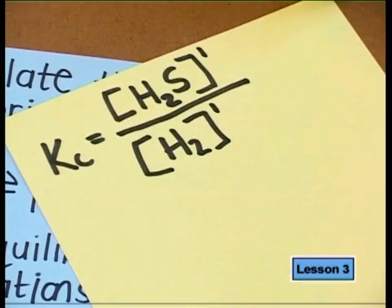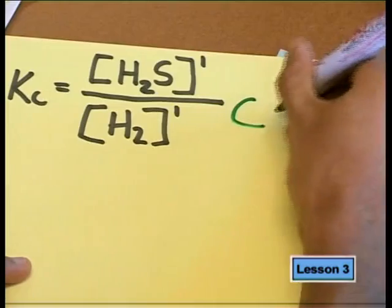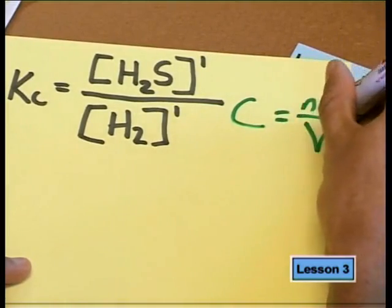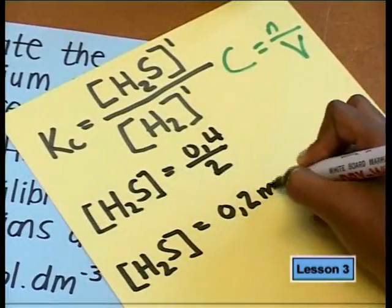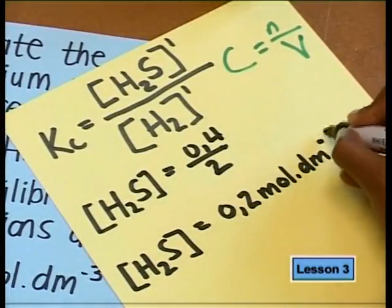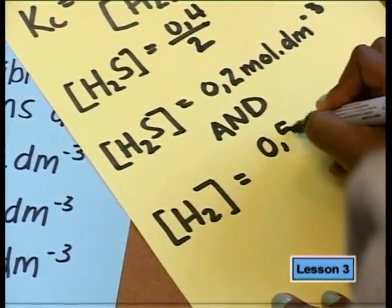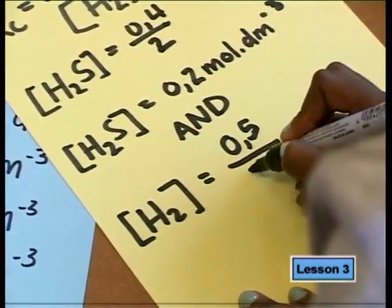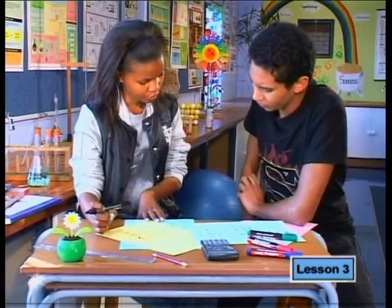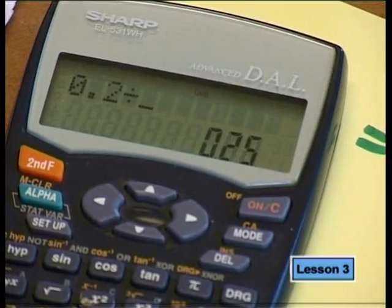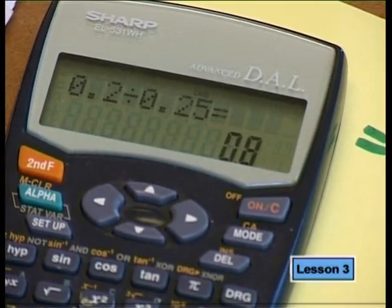We don't have concentrations — only moles. Since we have the volume, we need to work out the concentrations. The formula is: concentration = moles ÷ volume (in dm³). The concentration of hydrogen sulfide equals 0.4 ÷ 2 = 0.2 mol·dm⁻³. Substituting into the equilibrium constant expression: 0.2 divided by 0.25 equals 0.8.